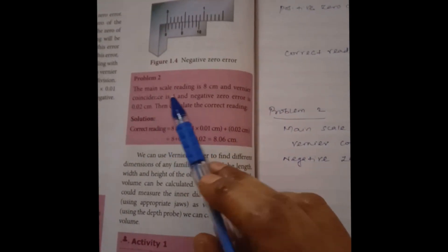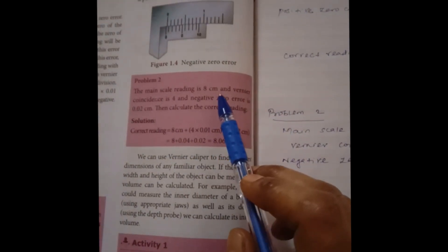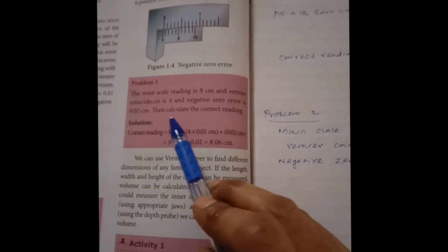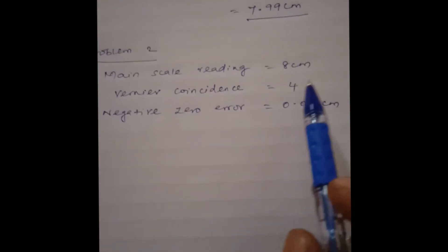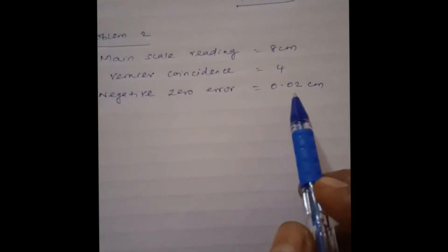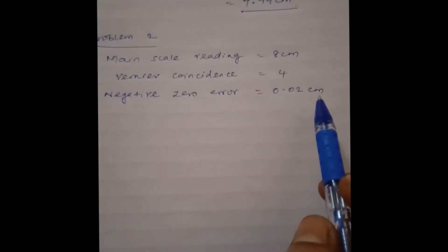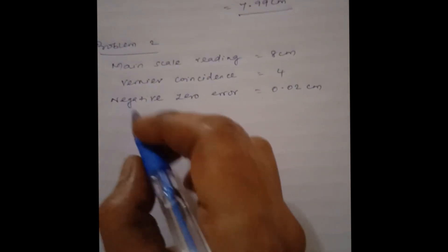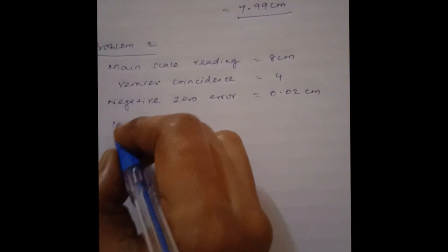Now see problem number 2. Main scale reading is 8 cm, vernier coincidence is 4, and negative zero error is 0.02 cm. Calculate the correct reading. Main scale reading 8 cm, vernier coincidence 4, negative zero error 0.02 cm. So first we have to calculate the negative zero correction.